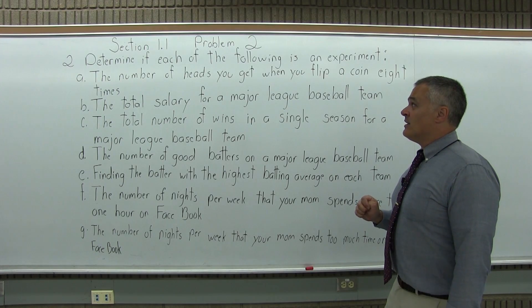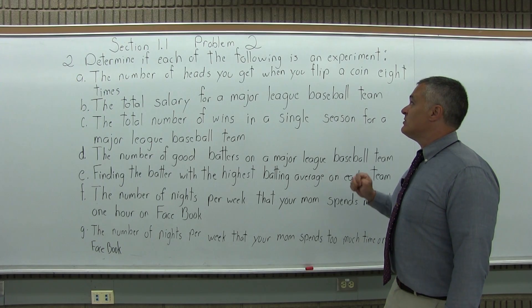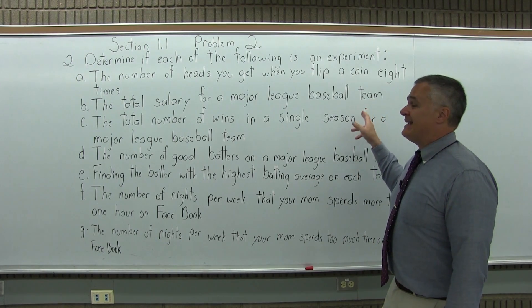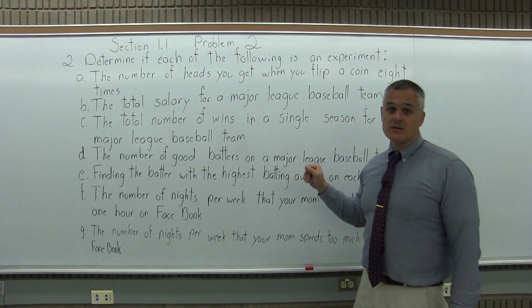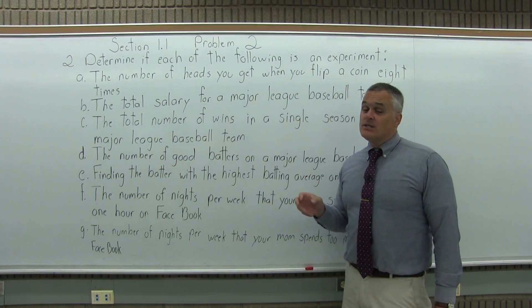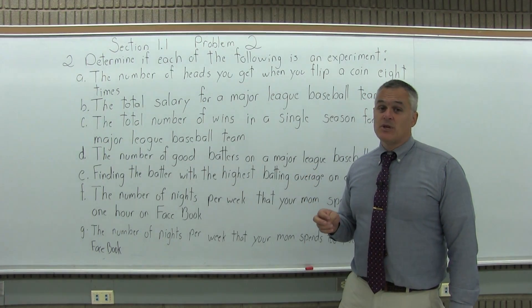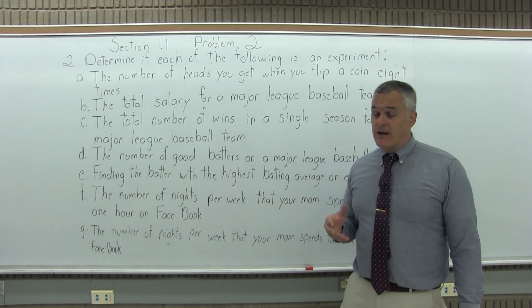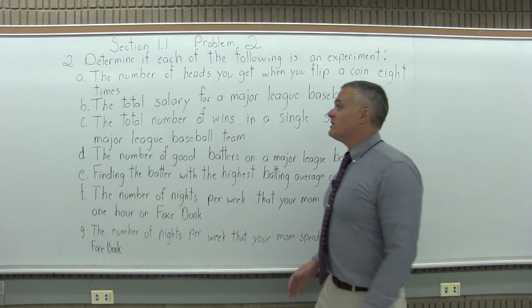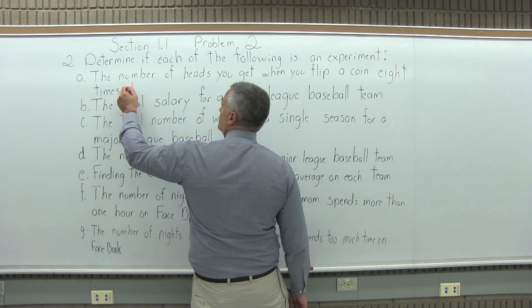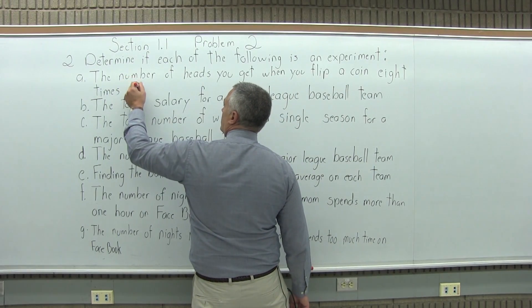Part A: the number of heads you get when you flip a coin eight times. It's not an opinion. If you flip the coin eight times and you have four heads or five heads, there's no opinion involved. So A is an experiment.